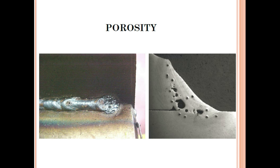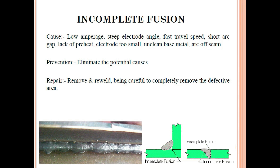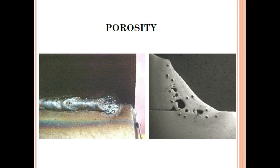Porosity appears as small voids in the weld. The main cause is improper electrode storage — if the electrode is damp, porosity will appear. Also, if current and voltage are not proper, or if the weld area is not properly shielded, porosity will occur. Prevention: use a proper, undamaged electrode stored correctly, and maintain correct current and voltage as per the WPS.